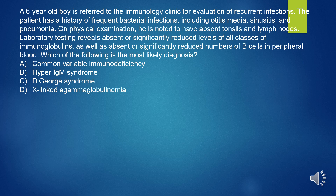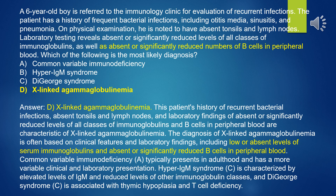A 6-year-old boy is referred to the immunology clinic for evaluation of recurrent infections. He has a history of frequent bacterial infections including otitis media, sinusitis, and pneumonia. Physical examination reveals absent tonsils and lymph nodes. Laboratory testing shows absent or significantly reduced levels of all classes of immunoglobulins, as well as absent or significantly reduced B-cells in peripheral blood. Which of the following is the most likely diagnosis? A. Common variable immunodeficiency. B. Hyper-IgM syndrome. C. DiGeorge syndrome. D. X-linked agammaglobulinemia. Answer: D — X-linked agammaglobulinemia. This patient's history and laboratory findings are characteristic of XLA.